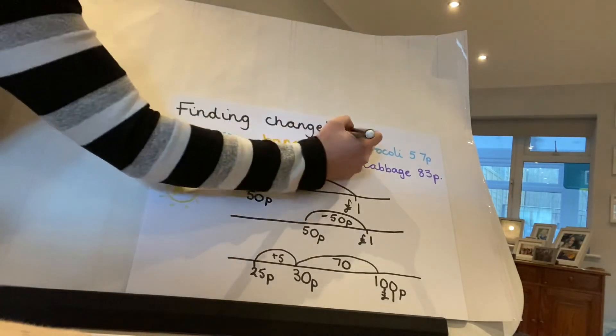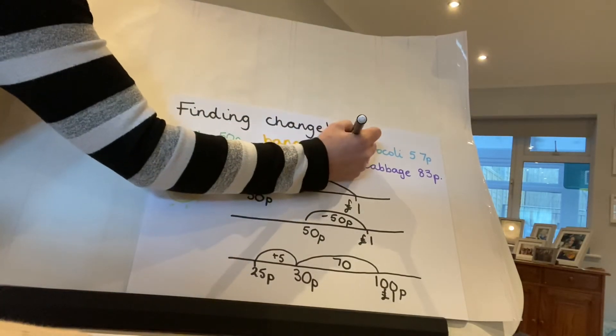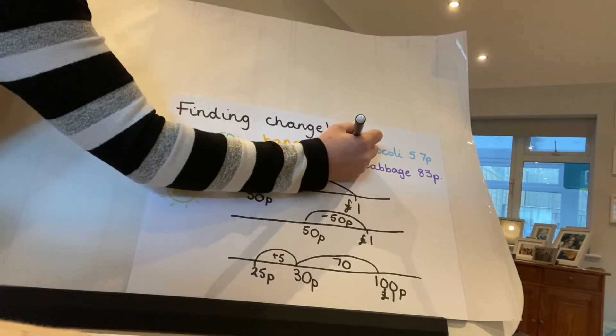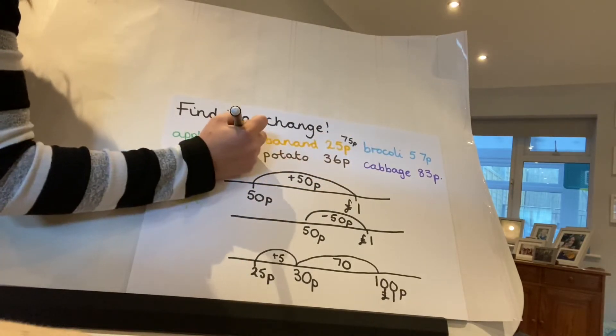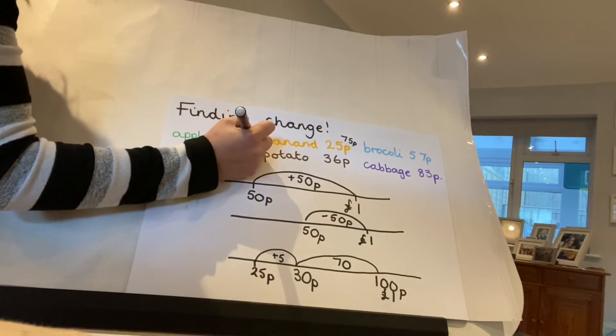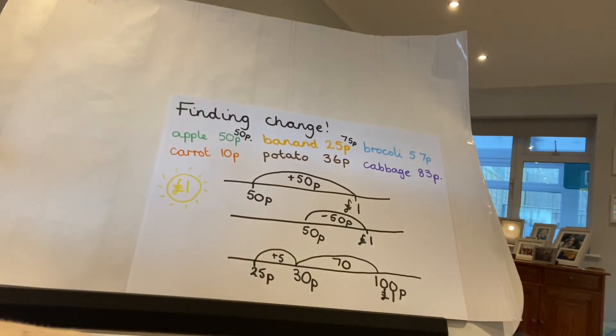So from my banana I would get 75 pence change, and from my apple I would get 50 pence change.